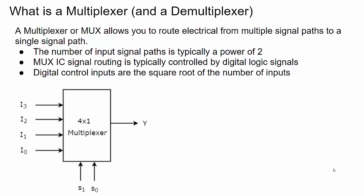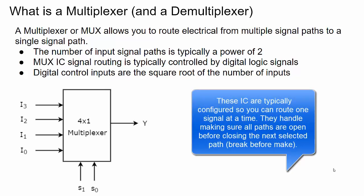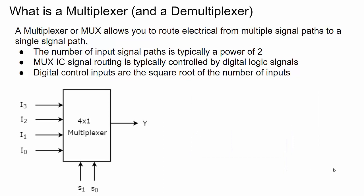A multiplexer is a switching device that has multiple switches built in, where you can take multiple input signals and route them to a single output. Typically the multiplexer will be some power of 2-to-1 — in this case 2 to the second power which is 4. A lot of times you'll see them in 8 and 16. For control they use digital logic, and since the inputs are 4 we need 4 discrete states, using 2 control signals S1 and S0. So S1 S0 of 1-1, 0-1, 1-0, or 0-0 routes signals I0 through I3 to output Y.